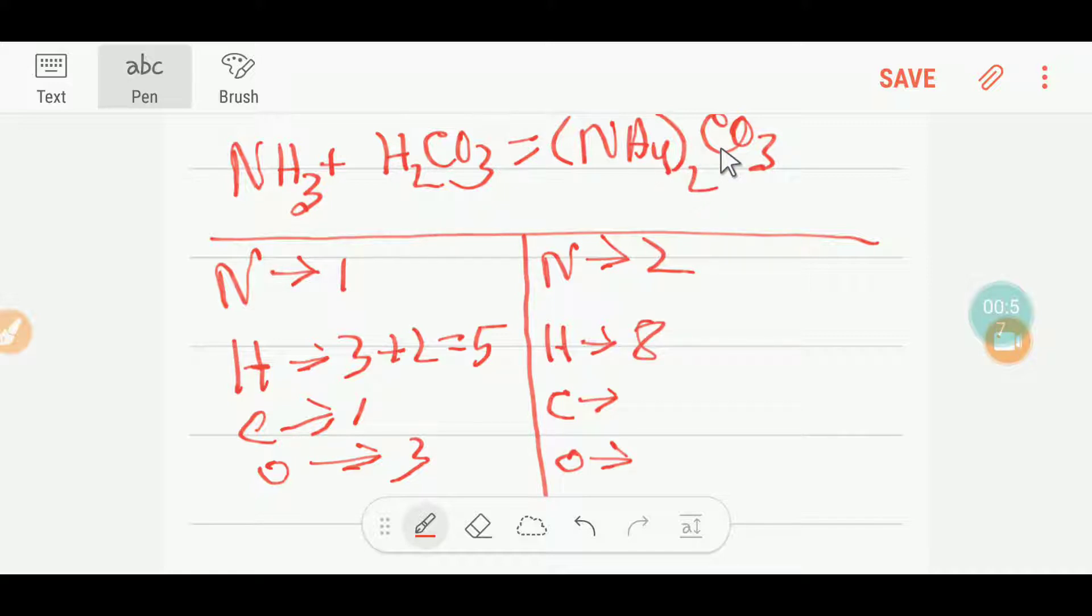And here we have one carbon and three oxygen. To balance this equation, here we have two nitrogen and here we have one nitrogen. What I can do is multiply here by two. These two must come before this nitrogen.